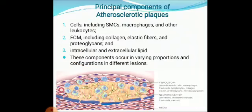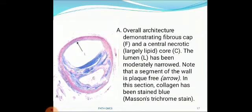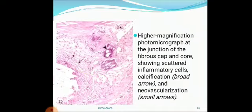The principal components of atherosclerotic plaques include cells — smooth muscle cells, macrophages, and other leukocytes — and extracellular matrix including collagen, elastic fibers, and proteoglycans. The third component is intracellular and extracellular lipids. These components occur in varying proportions and configurations in different lesions. The picture shows a fibrous cap with components of smooth muscle cells, macrophages, cholesterol crystals, and foam cells, and fibrous cap with lumen occlusion. The collagen is stained blue with the Masson trichrome stain.